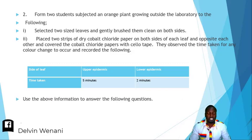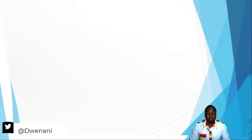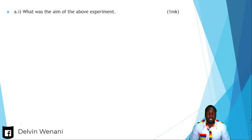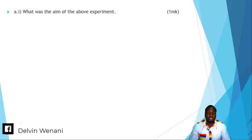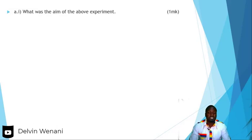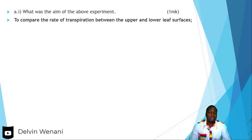Use the above information to answer the questions that follow. The first question asks: what was the aim of the above experiment? We are comparing transpiration taking place on two sides — the upper and the lower epidermis — and looking at the time the cobalt chloride paper changed on each. The aim of the experiment was to compare the rate of transpiration between the upper and the lower leaf surfaces.